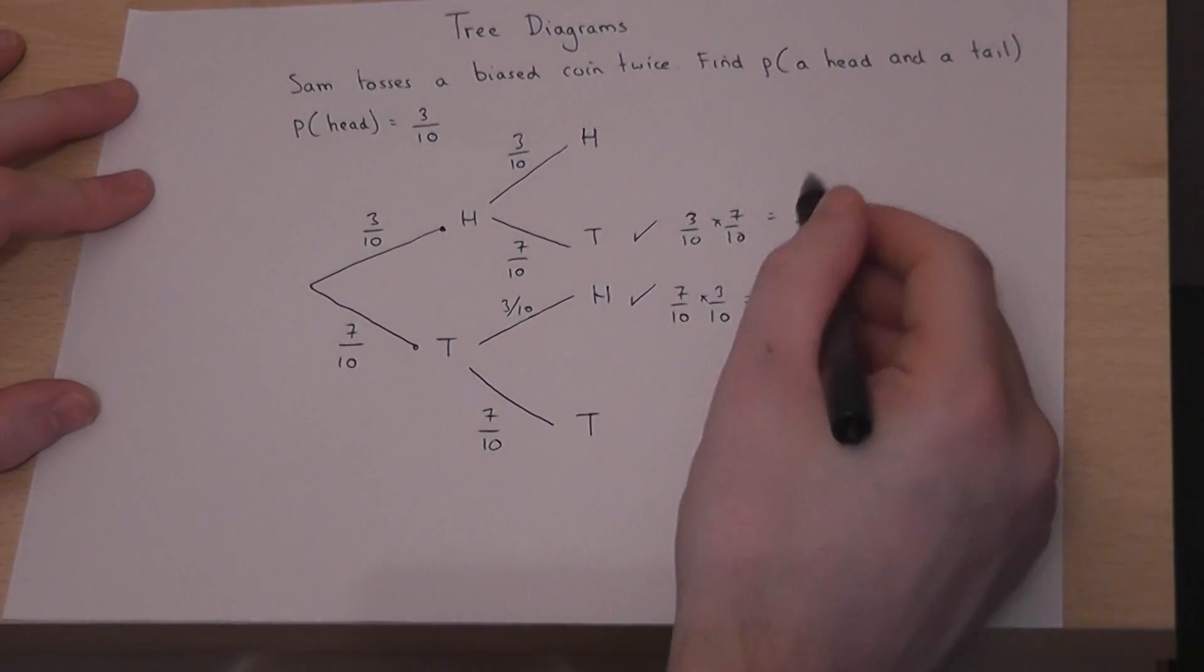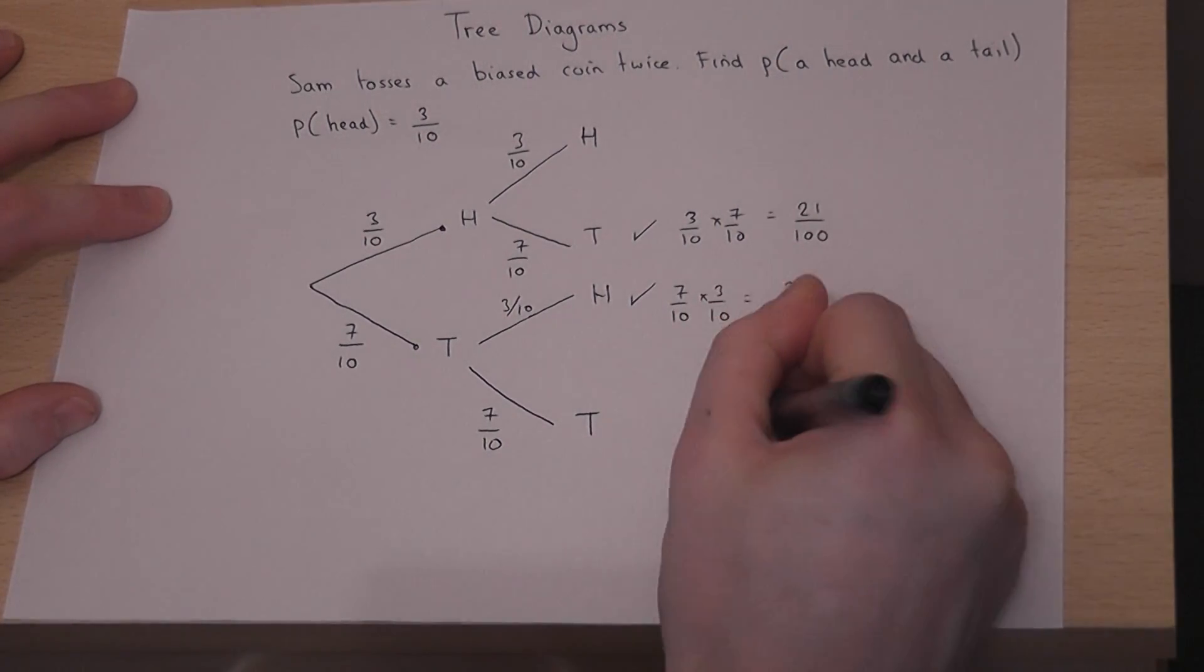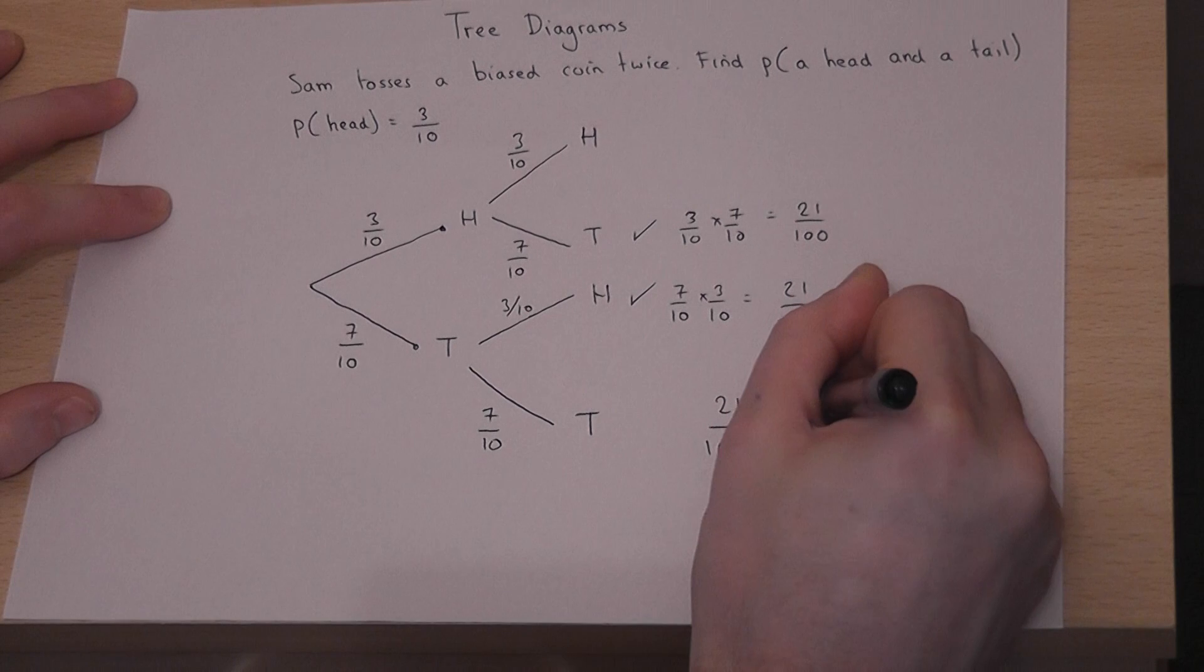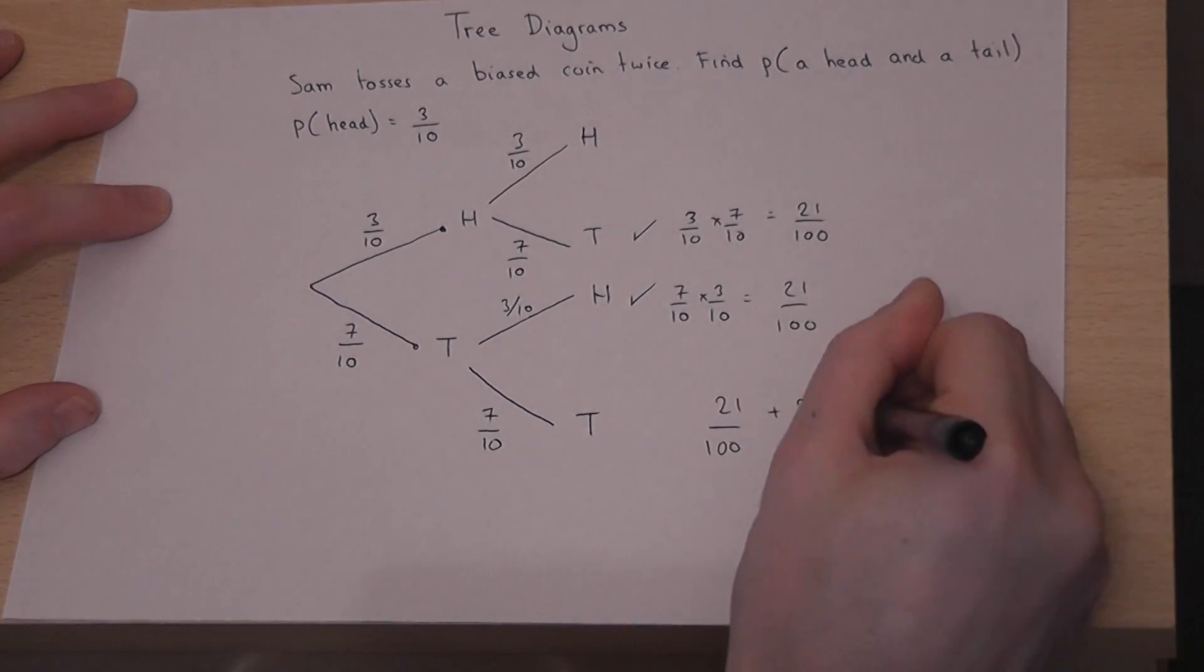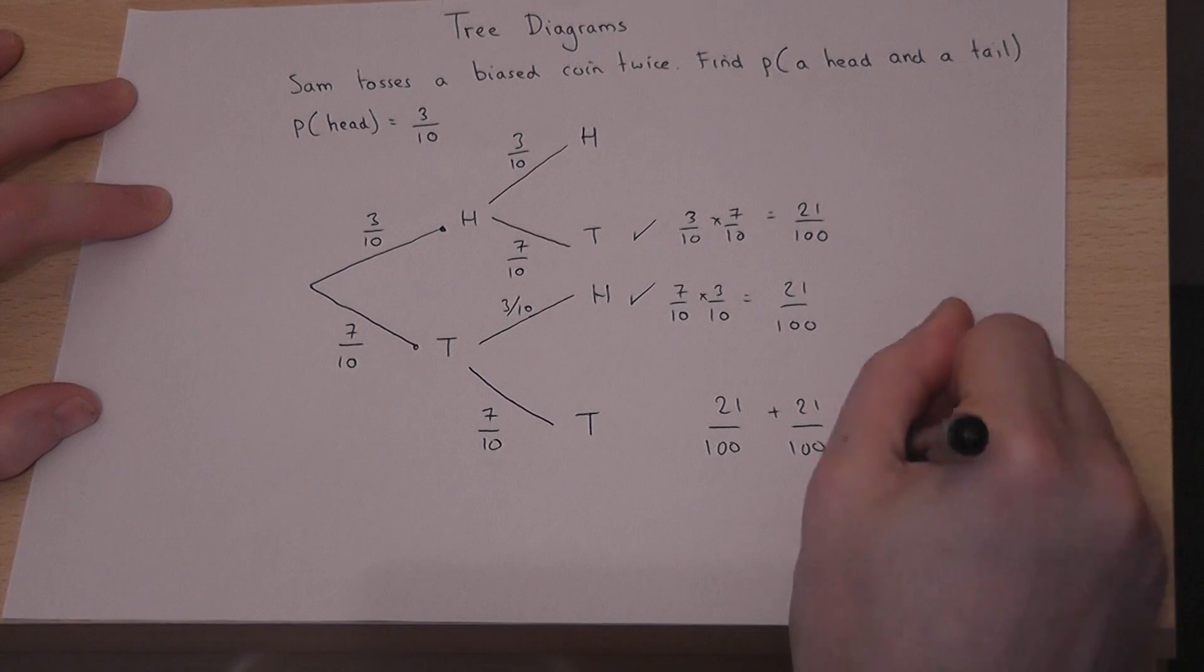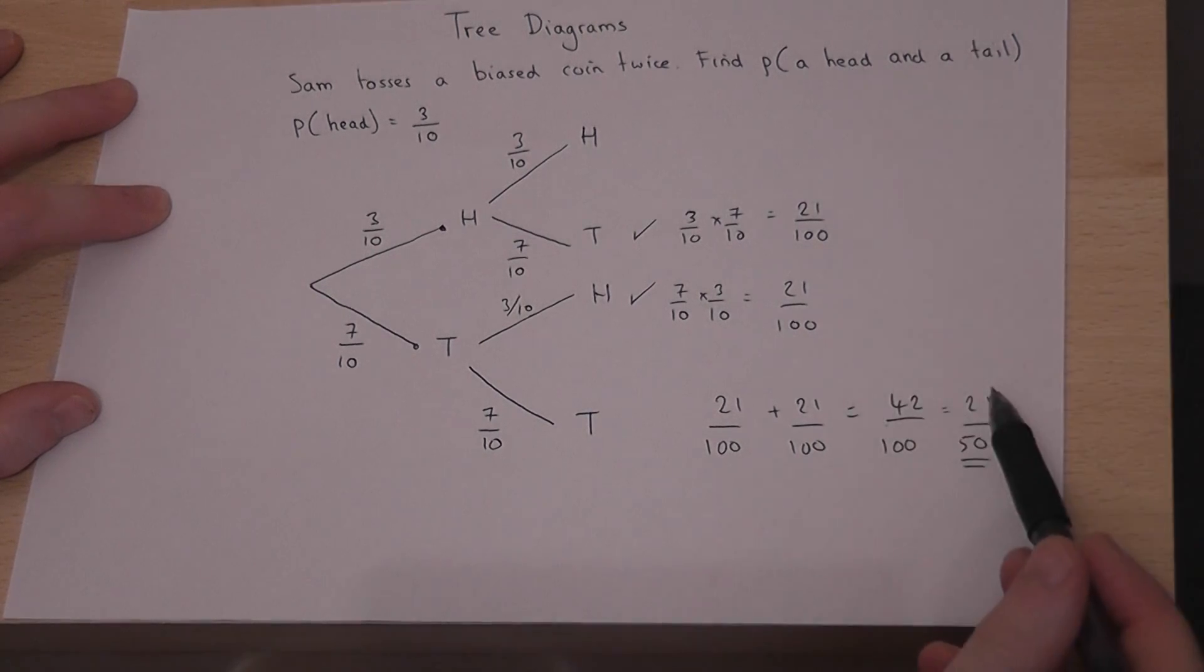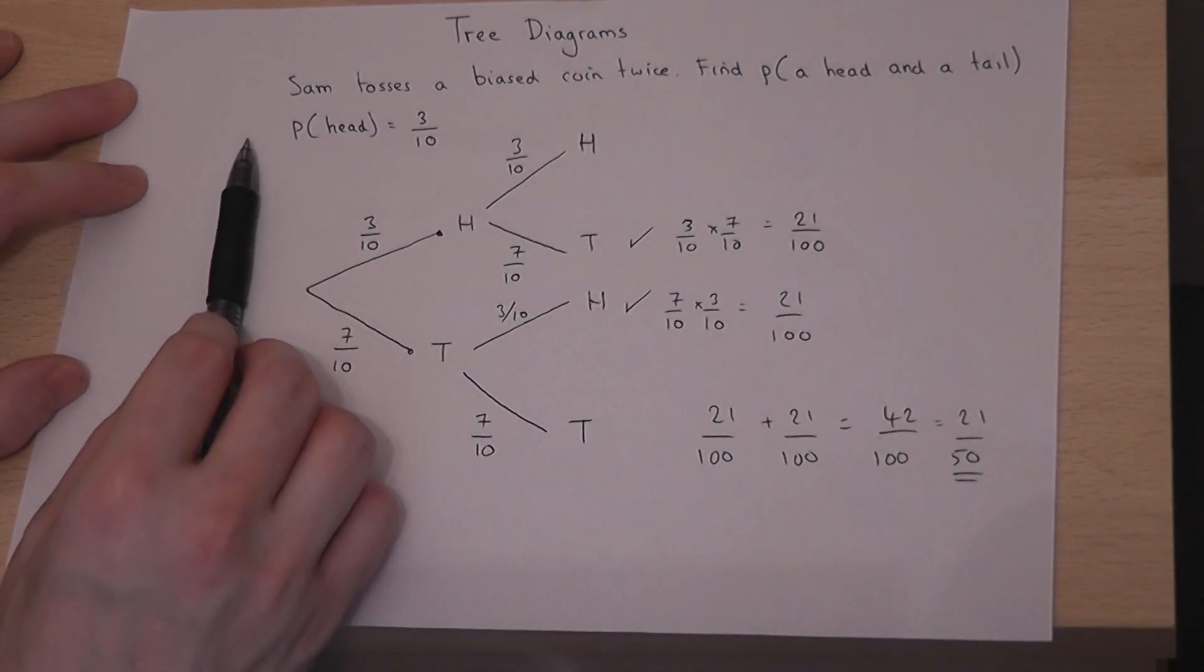Because there were two different ways to get a head and a tail, we then add together those fractions to get the overall answer, which is 42 over 100, or 21 over 50. So the chance of getting a head and a tail is 21 out of 50.